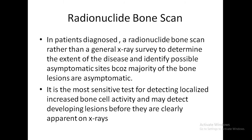In patients already diagnosed, a radionuclide bone scan is preferable to a general X-ray survey because most patients are asymptomatic and it helps in determining the extent of the disease and identifying possible asymptomatic sites. The radionuclide bone scan is the most sensitive test for detecting localized increased bone cell activity in Paget's disease and may detect developing lesions even before they are clearly apparent on X-rays.